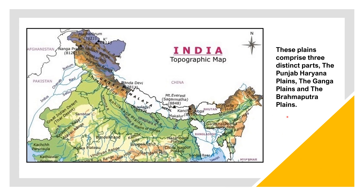These plains comprise three distinct parts: the Punjab-Haryana Plains, the Ganga Plain, and the Brahmaputra Plain. This entire plain is drained by several rivers, the major ones being the Indus, the Ganga, and the Brahmaputra. Each of them has several tributaries which make this entire region very fertile and arable for all types of crops.